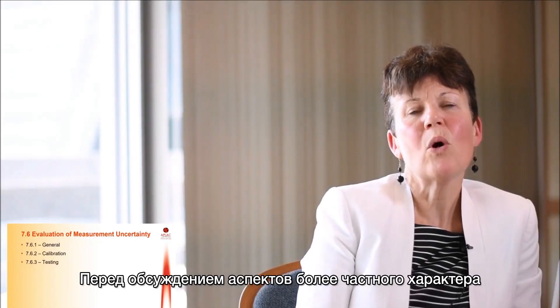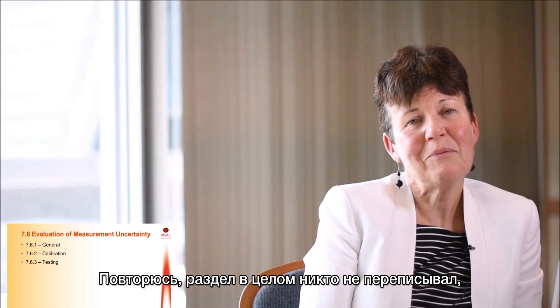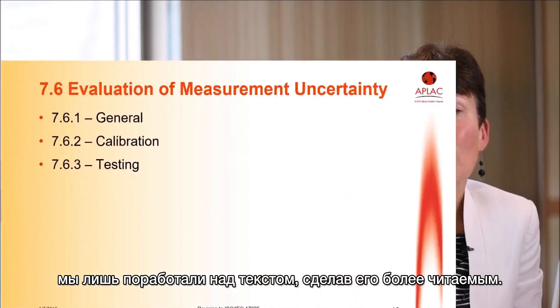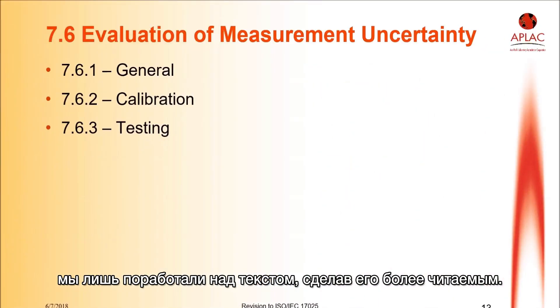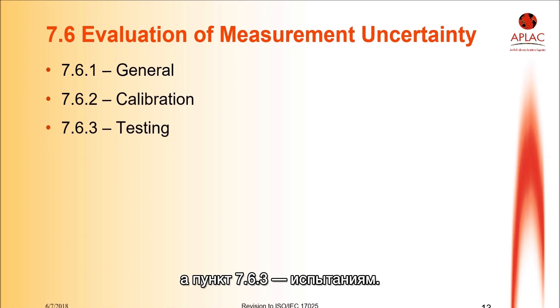There are two more global changes in Section 7.6 that I'd like to talk about before we get into the details. Really not big changes per se. The section was organized to flow a bit better. As you can see, 7.6.1 is general requirements, 7.6.2 calibration, and 7.6.3 for testing. So, reorganization.